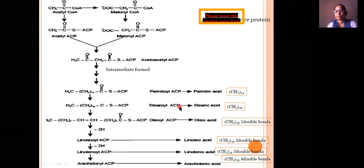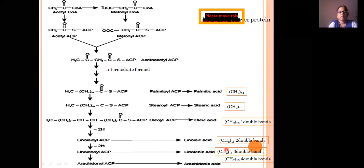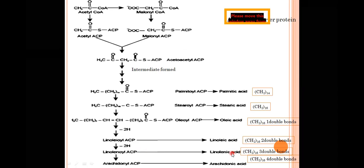Further reactions produce many intermediates and finally form palmitoyl-ACP, which gives palmitic acid containing 14 carbon atoms. Palmitic acid then gives stearic acid (stearoyl-ACP) containing 16 carbon atoms. On dehydrogenation, a double bond is formed, giving unsaturated fatty acids — oleic acid (one double bond). Further dehydrogenation gives two double bonds (linoleic acid), and then three double bonds (linolenic acid). Linolenic acid on dehydrogenation gives arachidonic acid, which has four double bonds.